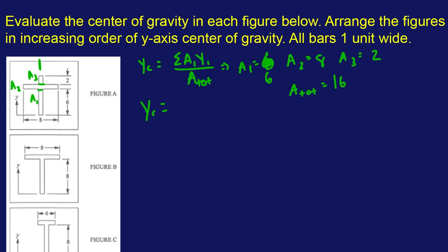We have to find Y1, Y2, Y3. The Y is the position of the centroid of that sub-rectangle. The middle of the rectangle is the centroid, so halfway between the height gives us Y1. We'll define Y1 as 3. Be careful with Y2: the centroid of the middle rectangle is halfway in between its one-unit width, but it's relative to the zero point for the Y-axis as defined in the problem. So Y2 is 6 plus a half, which is 6.5. Y3: we add 6 plus 1, that's 7, plus 1, that is 8. So that's our Y1, Y2, Y3.